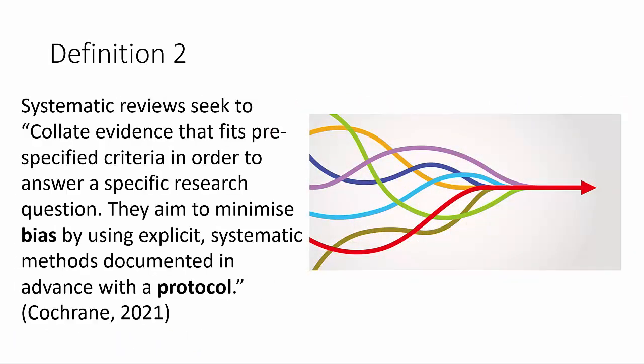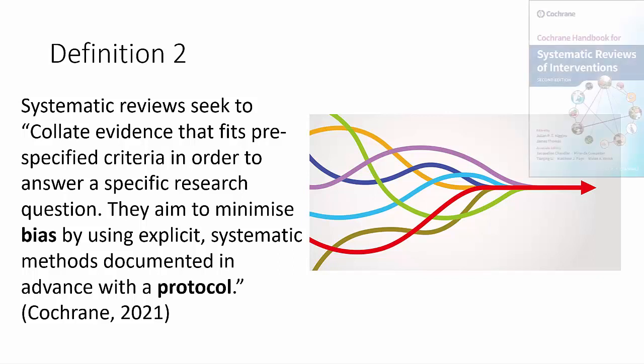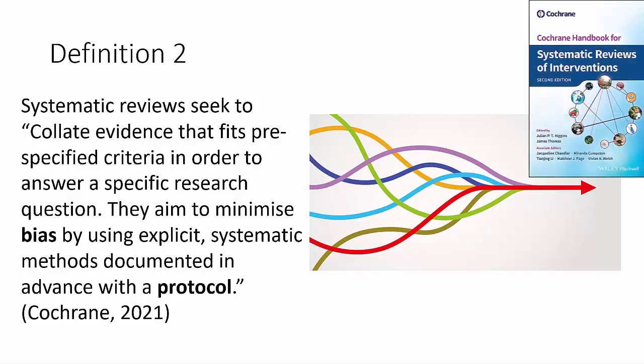This is performed in a transparent and repeatable way. This second definition is taken from the Cochrane review, also known as the Cochrane Library, which is one of the world leaders in monitoring and guiding researchers through the systematic review process. The Cochrane Handbook will also feature heavily in this series of videos and is freely available via their website — I will give the reference at the end.